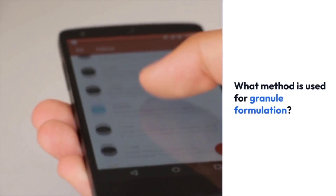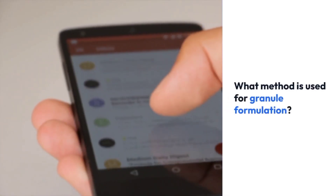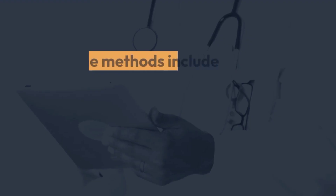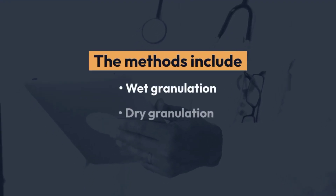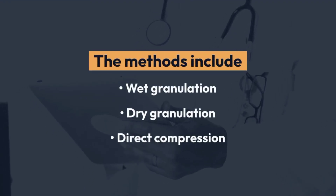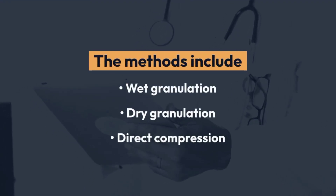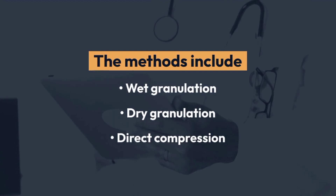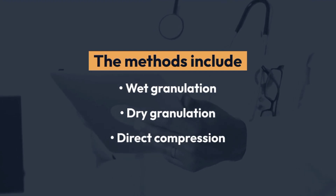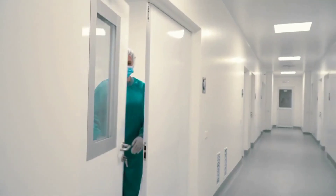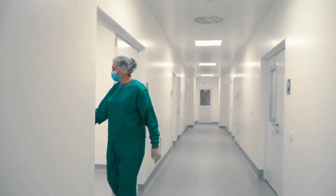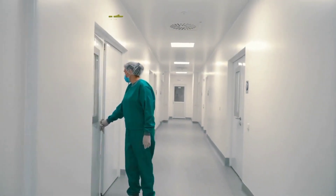What method is used for granule formulation? The methods include wet granulation, dry granulation, and direct compression. Give examples of diluents and lubricants? These are key processes in pharmaceutical manufacturing.